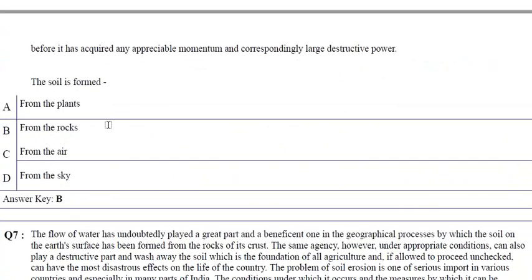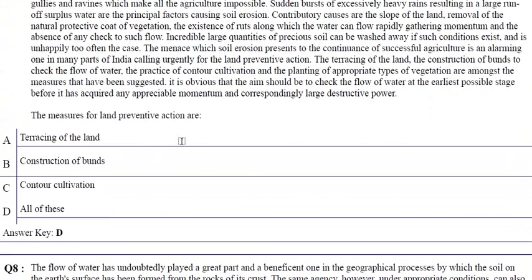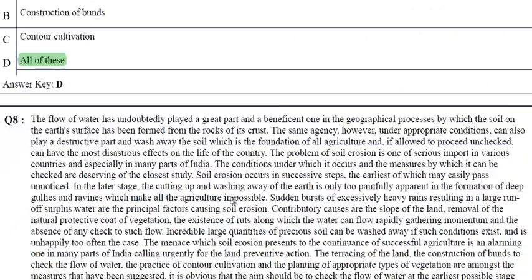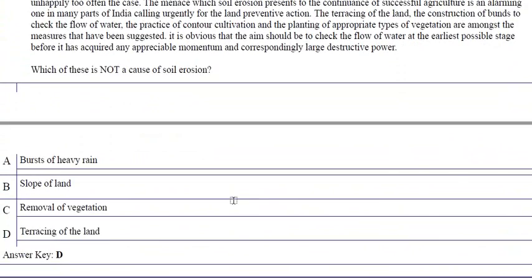The soil is formed from the rocks. The next question: the measures for land preventive actions are all of these — terracing of the land, construction of bunds, and contour cultivation. These all come under the category of measures of land preventive action. Which of the following is not a cause of soil erosion? The answer is terracing of the land — this is not a cause of soil erosion.